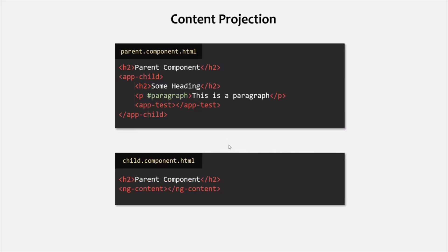Now using the ContentChild decorator, what we can do is access a reference of any of these projected contents in the child component class. Let's try to understand this with a simple example.